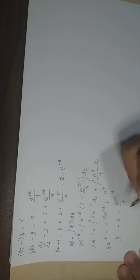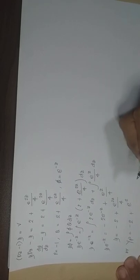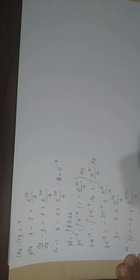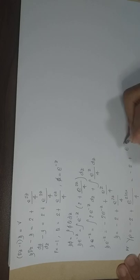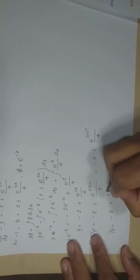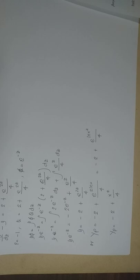So yp = −2 + e^(2z)/4. Since z = ln x, we have e^(2z) = e^(2·ln x) = e^(ln x²) = x². Therefore yp = −2 + x²/4.